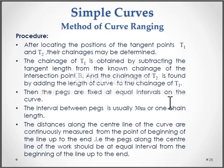Then the pegs are fixed at equal intervals on the curve. The interval between pegs is usually 30 meter or one chain length. The distances along the center line of the curve are continuously measured from the point of beginning of the line up to the end. The pegs along the center line of the curve should be at equal interval from the beginning of the line up to the end.